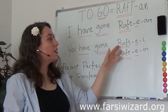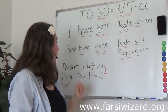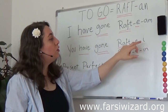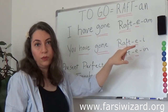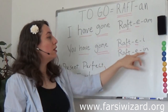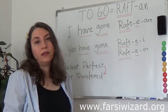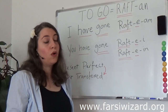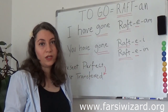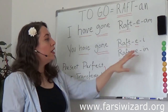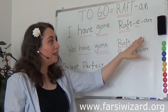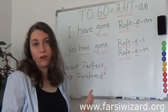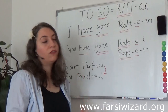'You have gone' — obviously you can guess — is RAF-TE-E. This is the informal 'you.' If you're talking to a person with whom you're supposed to be formal, let's say a senior citizen, your grandfather, your boss, or if you're talking to more than one person — a group of people — you will need to use -EIN rather than -E. So RAF-TE-IN means 'you plural have gone,' or 'you singular formal have gone.'